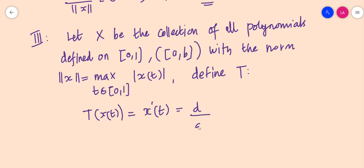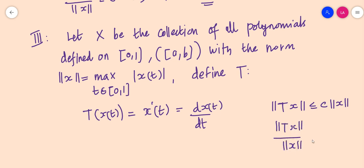This is a linear operator defined on X. We have to determine whether it is bounded or not — and actually this operator is not bounded. To prove it is not bounded, we must show it does not satisfy ‖Tx‖ ≤ c · ‖x‖ for any c and every x, i.e., that ‖Tx‖ / ‖x‖ ≤ c does not hold.